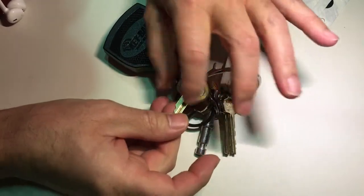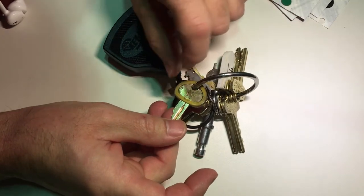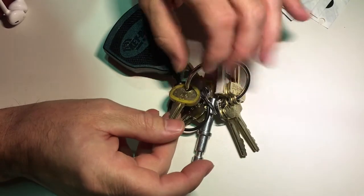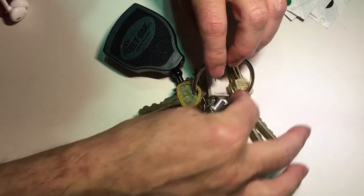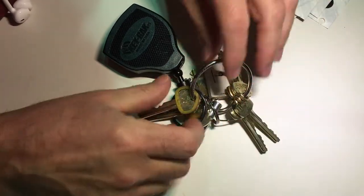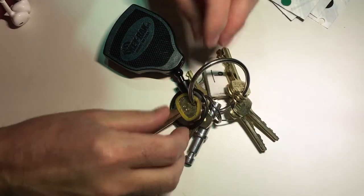So we use these little ring tabs to distinguish between which keys we're looking at, but when these break off you can't put a new one on unless you replace this entire ring, which is a waste. You have to cut this off and put a brand new one on.